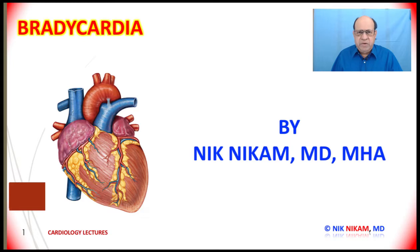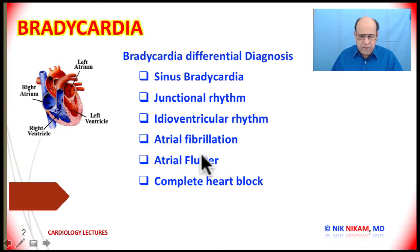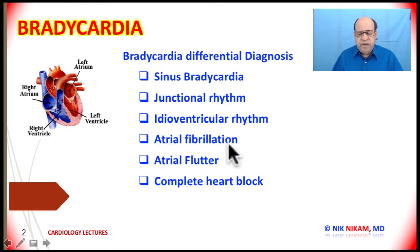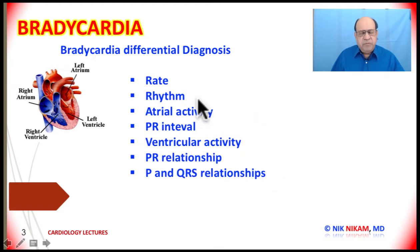Let us learn something about bradycardia and look at some of the differential diagnoses on an electrocardiogram. We could be dealing with sinus bradycardia, junctional rhythm, idioventricular rhythm, atrial fibrillation with slow ventricular response, atrial flutter with slow ventricular response, complete heart block, and many more.